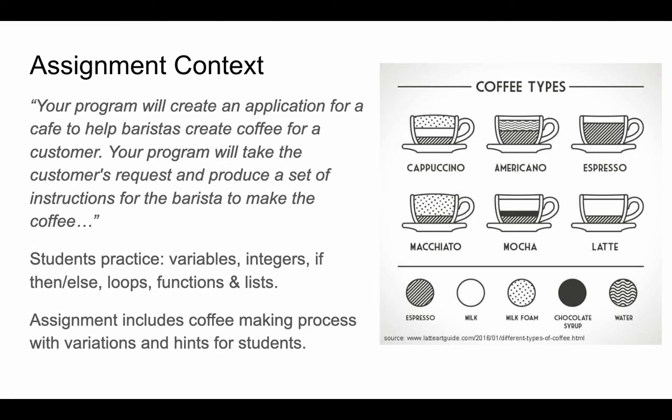In this activity, students practice variables, integers, conditionals, loops, functions, and lists. The assignment includes guidance on the coffee making process with variations and hints for students. This activity could be done in pairs, groups, or individually. It's expected to take around two to three hours depending on how you use the assignment.